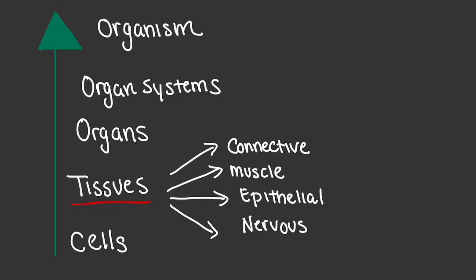One of the things that's going to be helpful is to identify, in a general or simplistic way, what each of these tissues represent and how they function. With connective tissue, in general, these types of tissues provide structural support for the body. With muscle tissue, these types of tissues produce contractions, and those contractions enable us the opportunity to have movement.